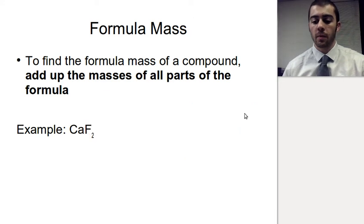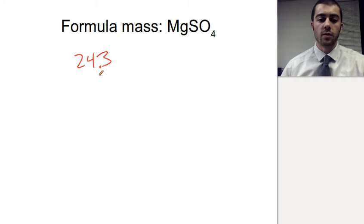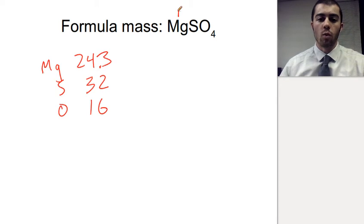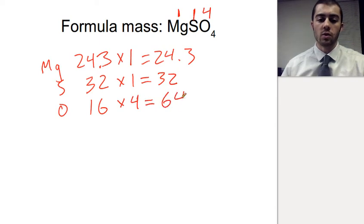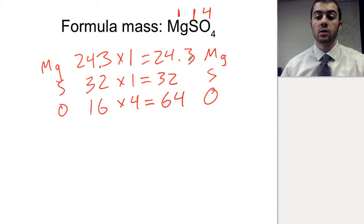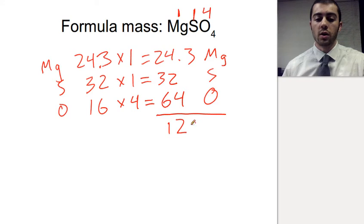Let's look at another example: the formula mass of MgSO4. Magnesium, from the periodic table, has a mass of 24.3. Sulfur has a mass of 32, and oxygen has a mass of 16. We have one magnesium, one sulfur, and four oxygens. Multiplying: magnesium gives us 24.3, sulfur gives us 32, and oxygen times four gives us 64. We take the atomic mass of each element, multiply by the number in the formula, and add them all up. That gives us a total of 120.3.